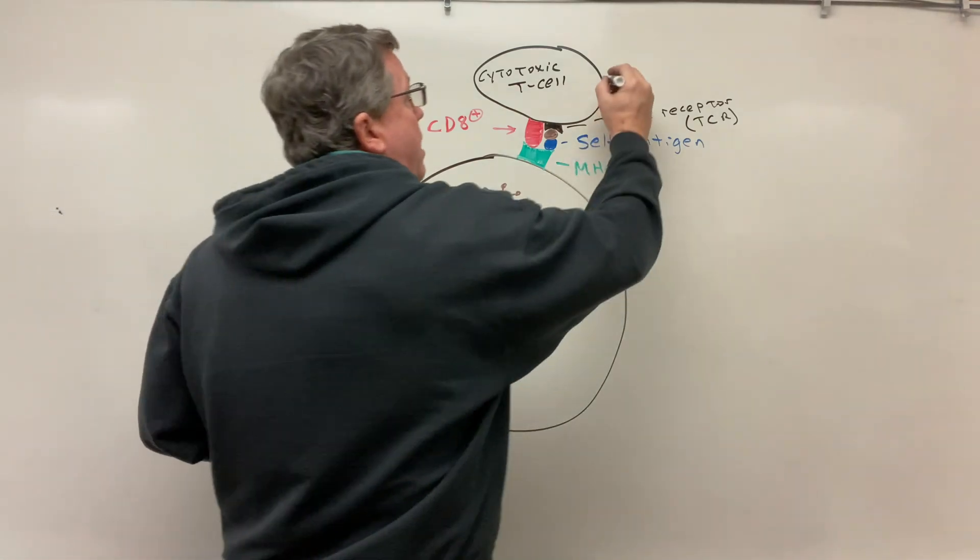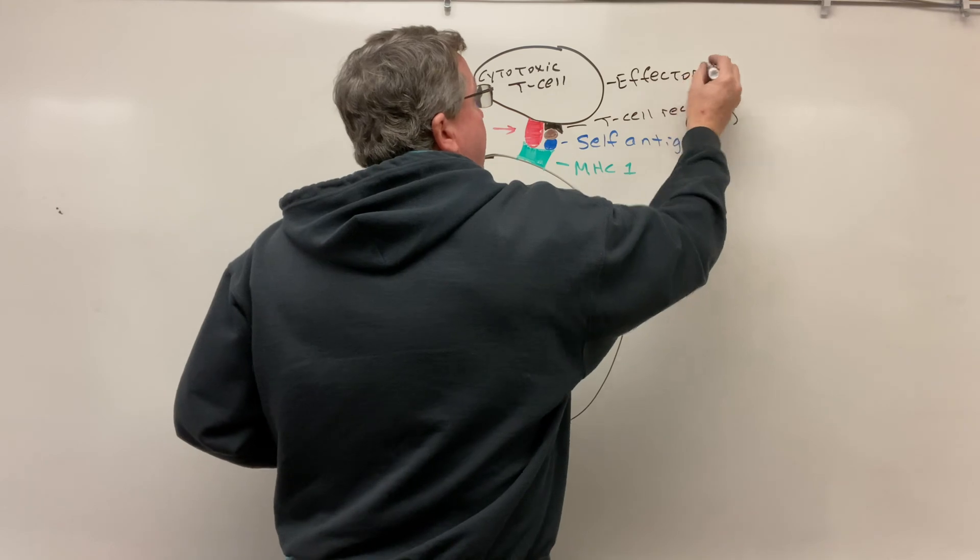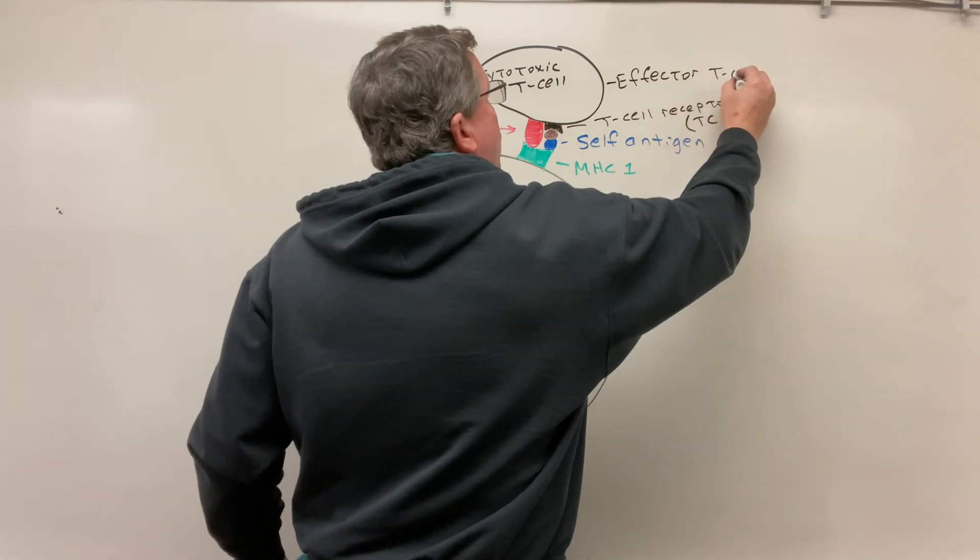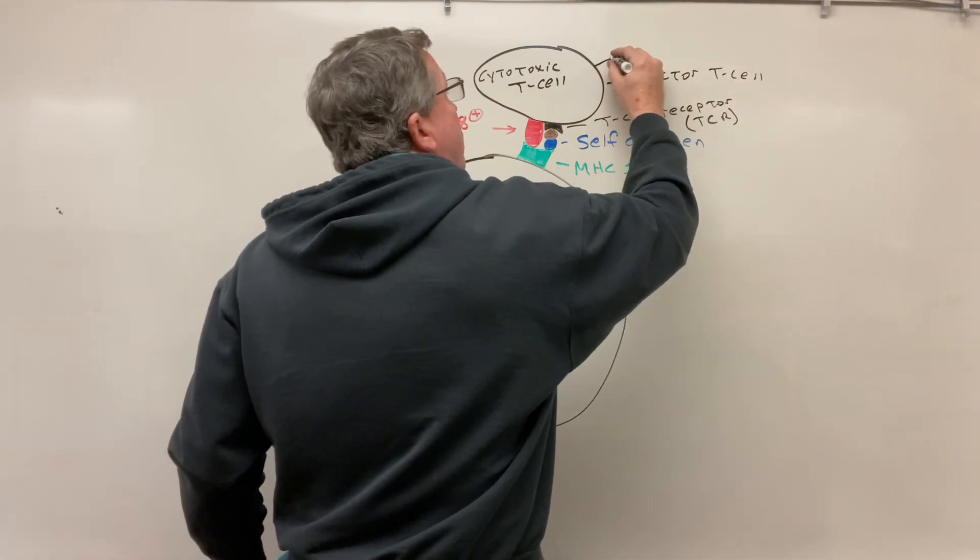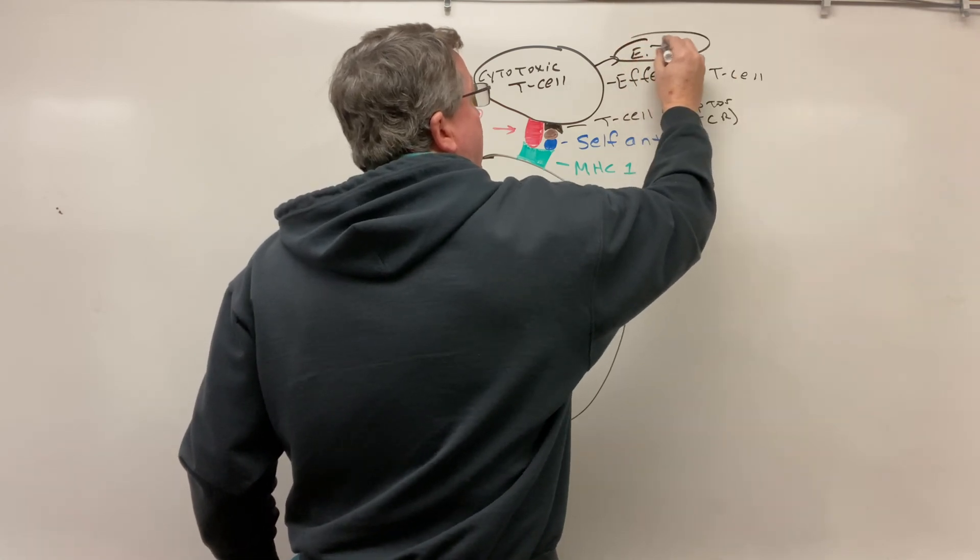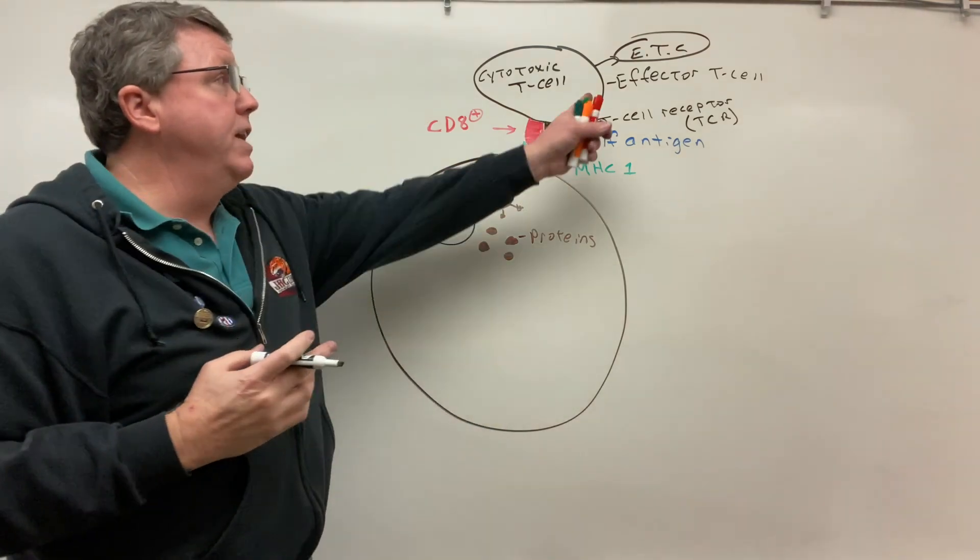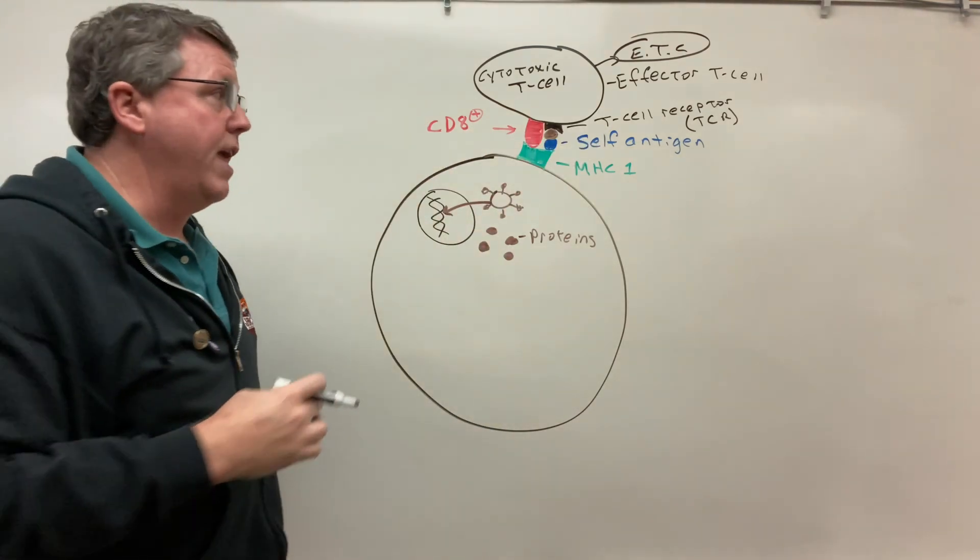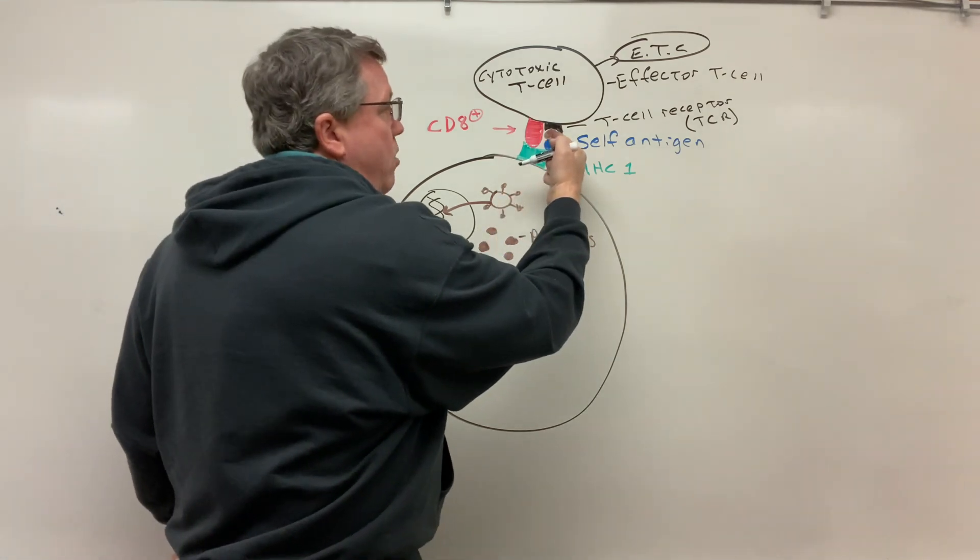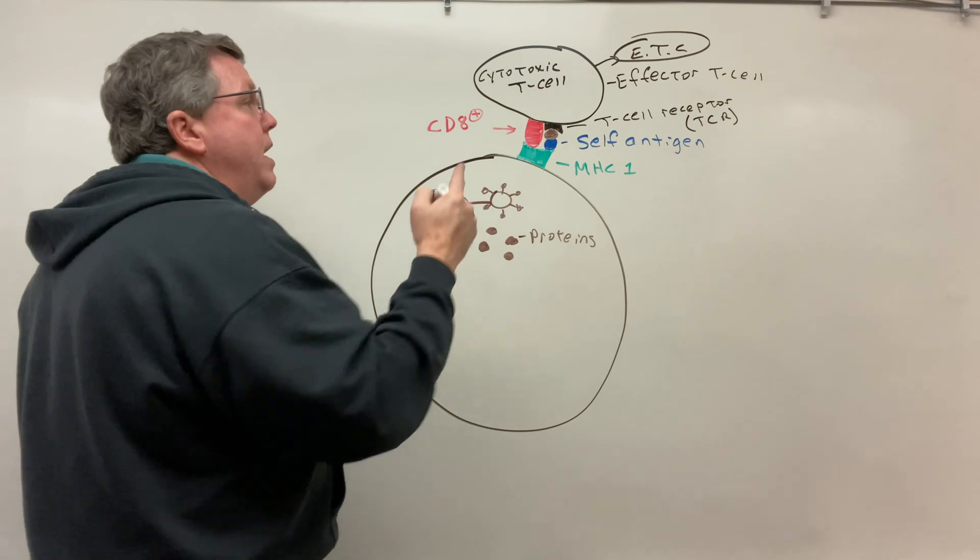This will actually become something called an effector T cell, so this is going to become an effector T cell. And two things are going to happen: one, this is going to go on and start multiplying to make more effector T cells, I'm just going to put ETC for effector T cells, right, but it's also eventually going to make memory T cells so that way if we ever run into this viral protein again, the body's going to be ready for an attack.